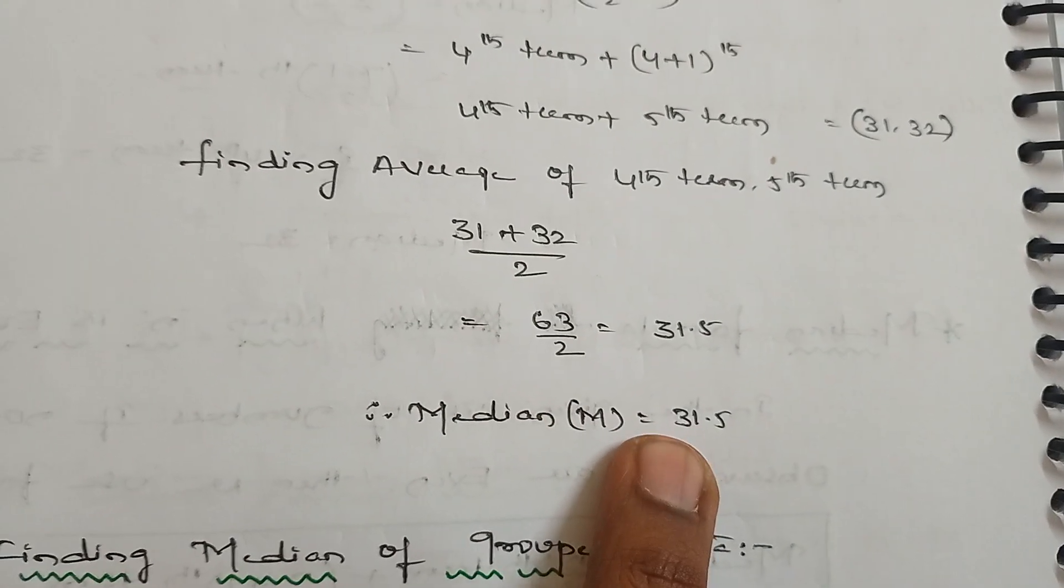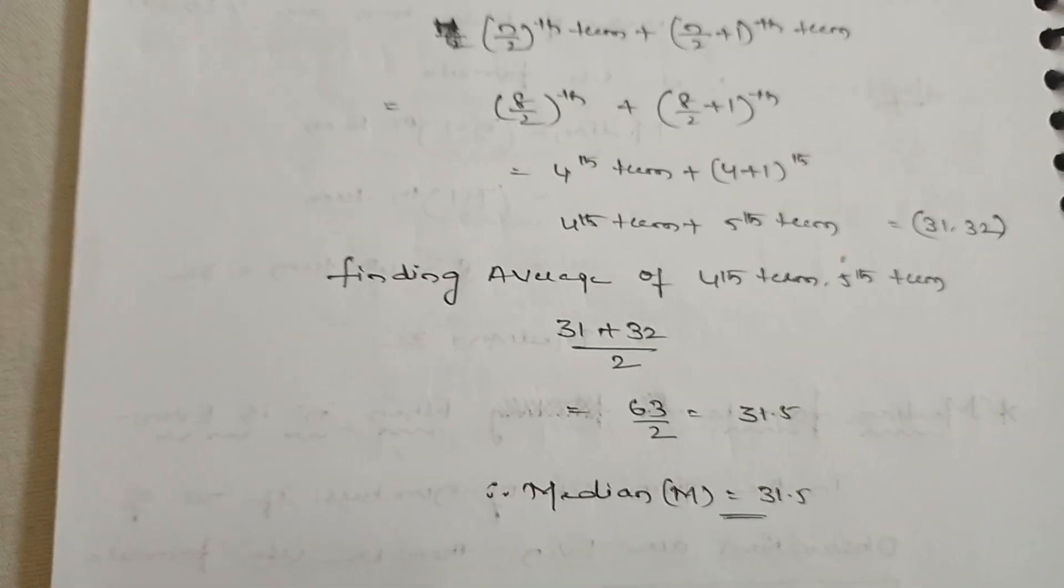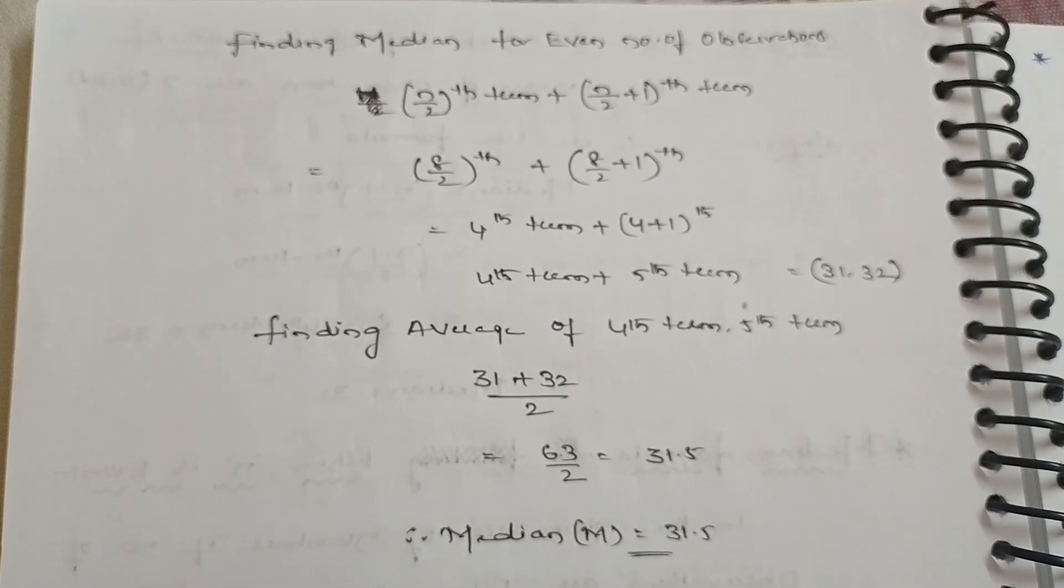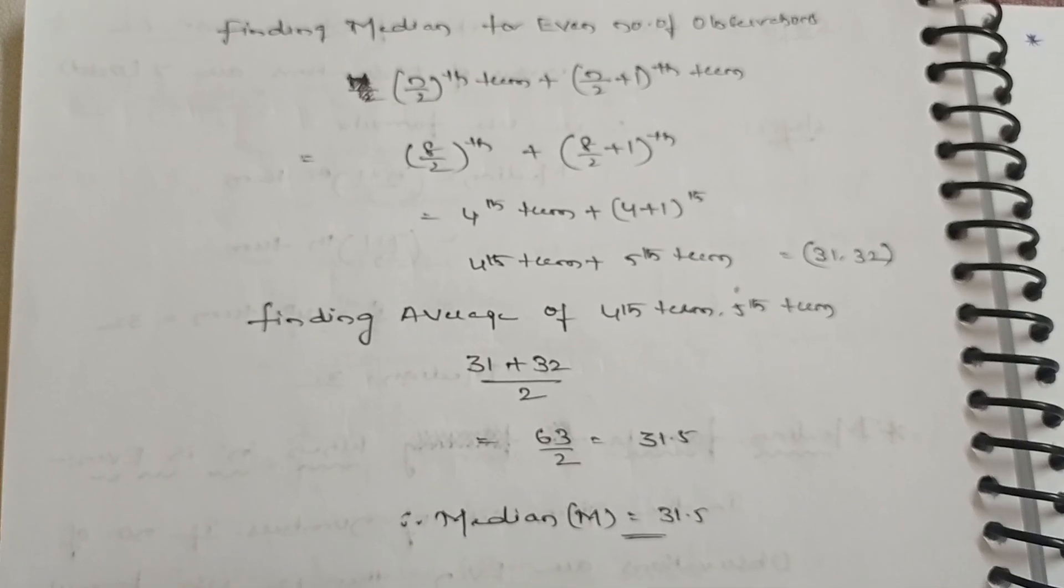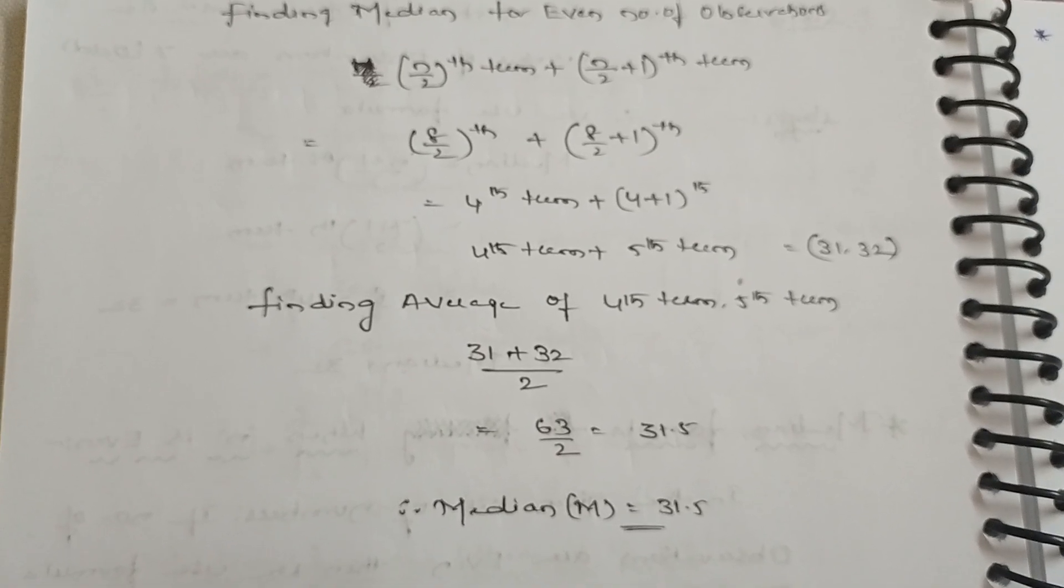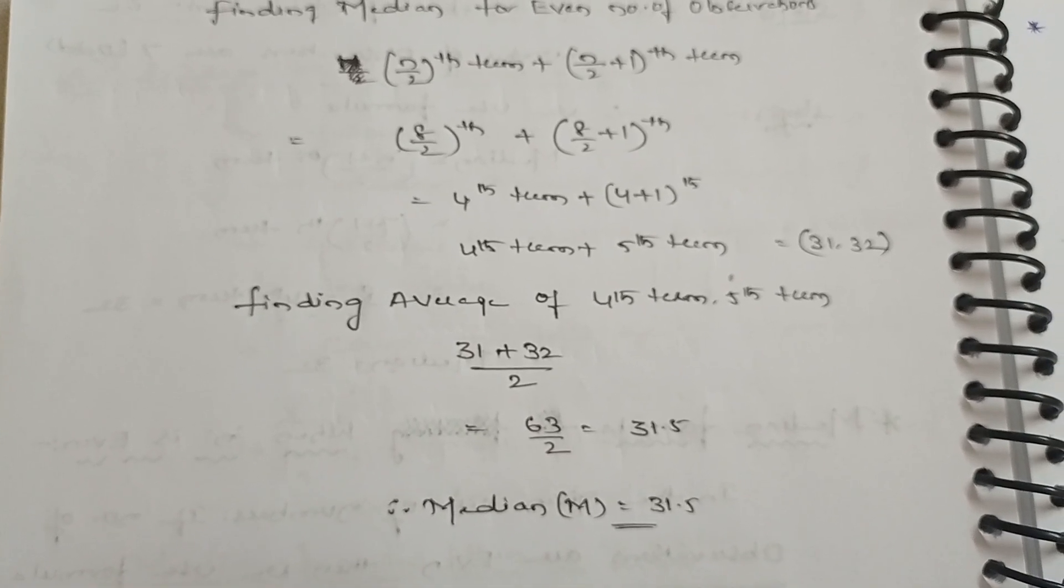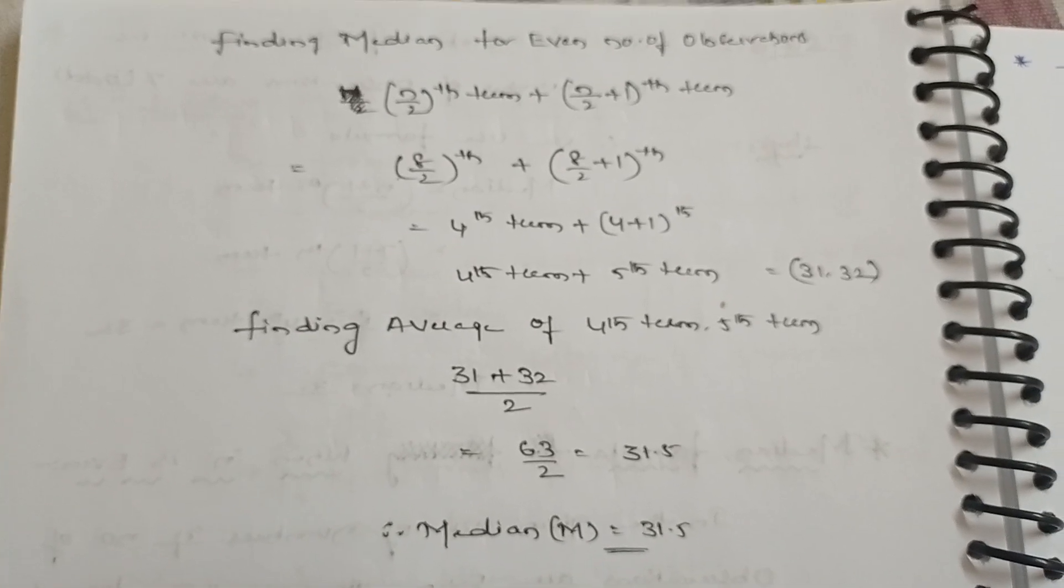Therefore, the median is 31.5 when the observations are even. I hope you understand this method. Thank you for watching. Please subscribe to my channel for more videos and updates.